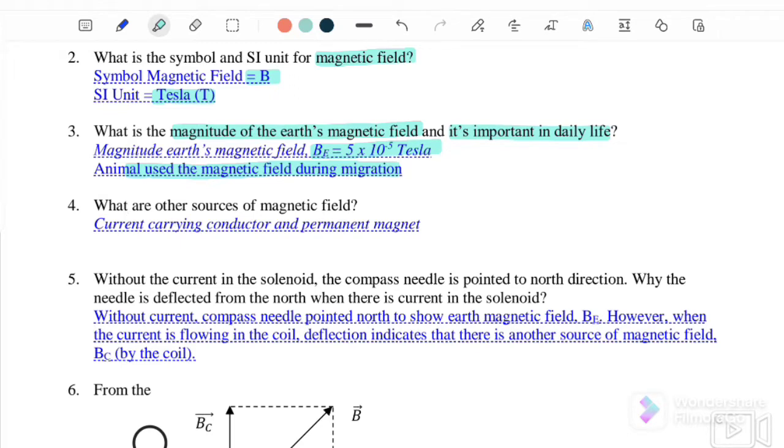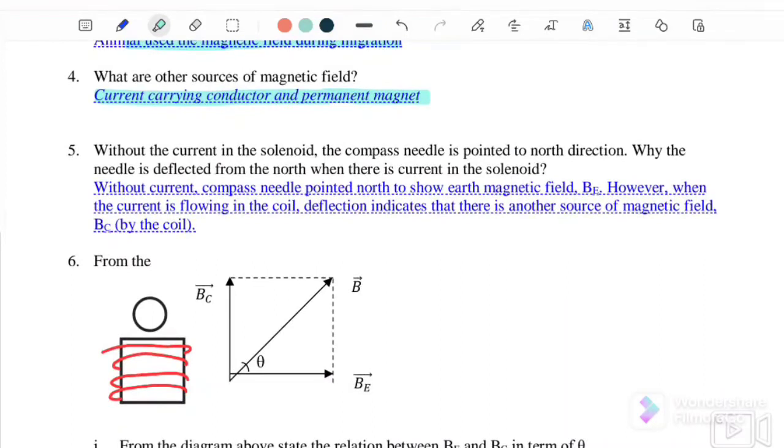What are other sources of magnetic field? Current-carrying conductors or permanent magnets. Without the current in the solenoid, the compass needle is pointing to the north direction, while the needle is deflected from the north when there is current in the solenoid.